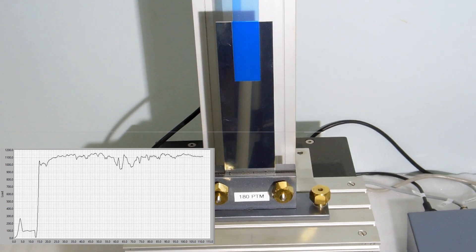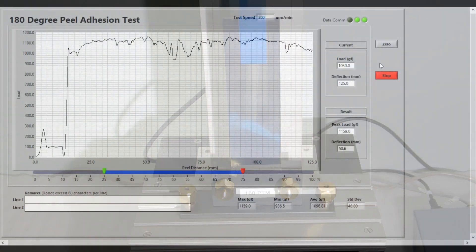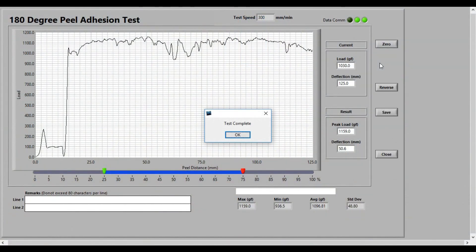After the test is complete, the machine will stop and the software will show a test completed sign. Select OK. You will see a slider under the graph. Try to select a flat portion from the middle of the graph, neglect the starting of the graph and a little bit from the end as well. Your statistical calculations will be made from this portion of the graph.